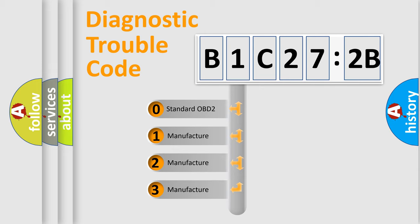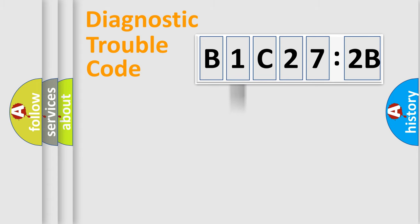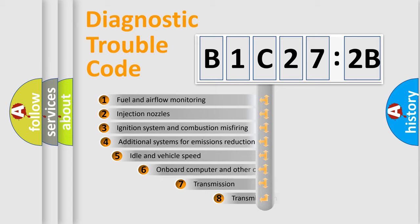If the second character is expressed as zero, it is a standardized error. In the case of numbers 1, 2, or 3, it is a more prestigious expression of the car-specific error.